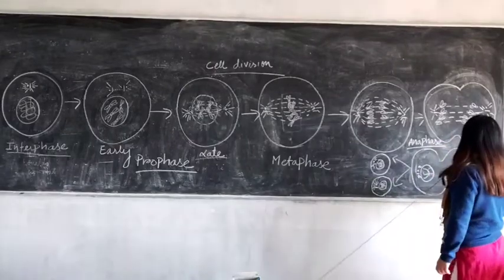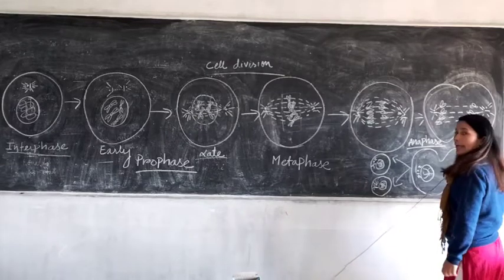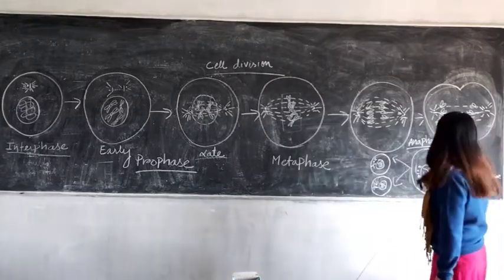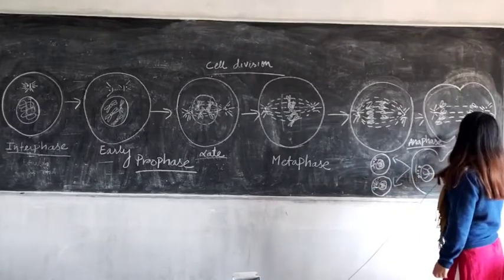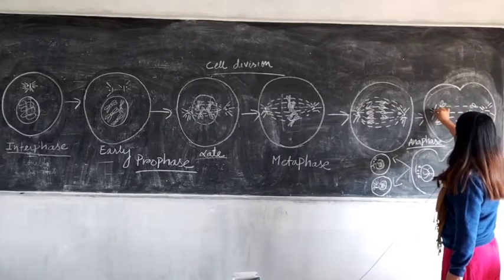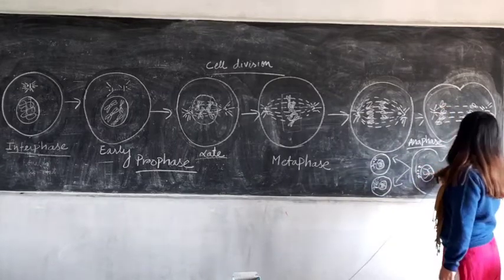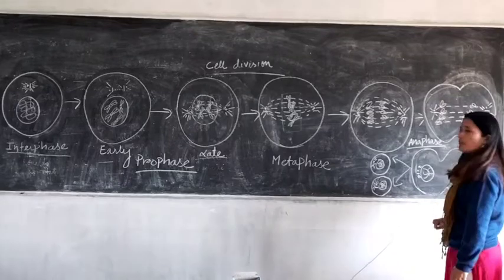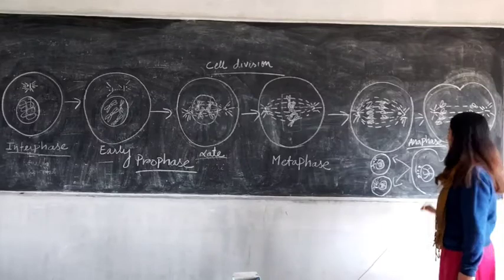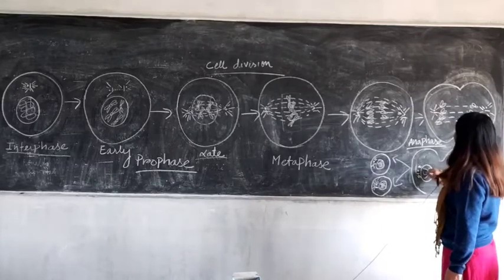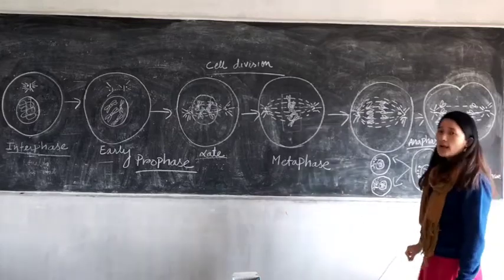After anaphase comes telophase. In telophase, the sister chromatids compartmentalize into two separate nuclei. The furrow deepens and nucleus separation takes place. Up to and including telophase, this is karyokinesis.